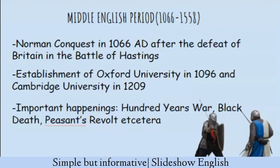This Middle English period is a very long span of time. A couple of important things happened: the Battle of Hastings was fought between the army led by the Duke of Normandy and the Anglo-Saxon king Harold Godwinson, which was the beginning of the Norman Conquest. After that, Anglo-French was declared the official language, while Old English remained the language of ordinary people. Education was spread across the country — Oxford University was established in 1096 and Cambridge University in 1209.